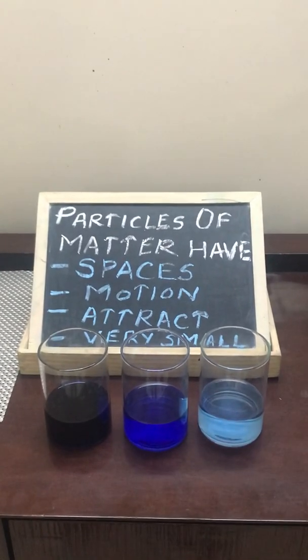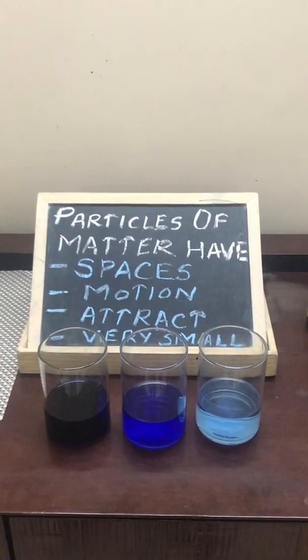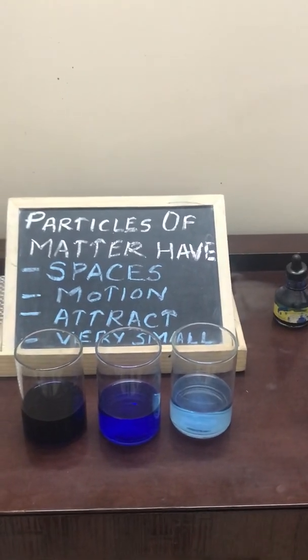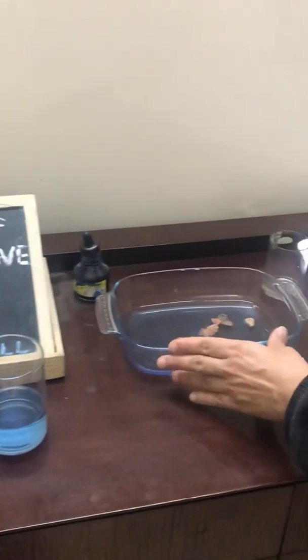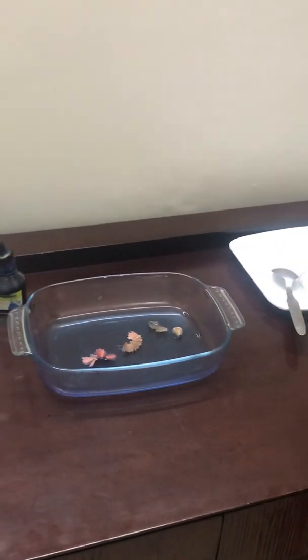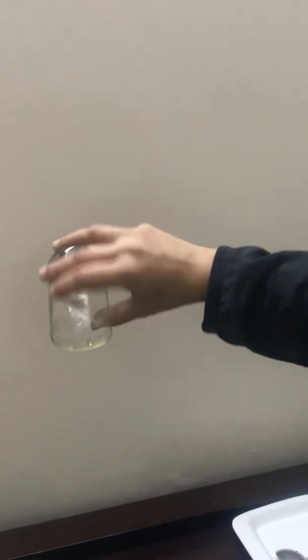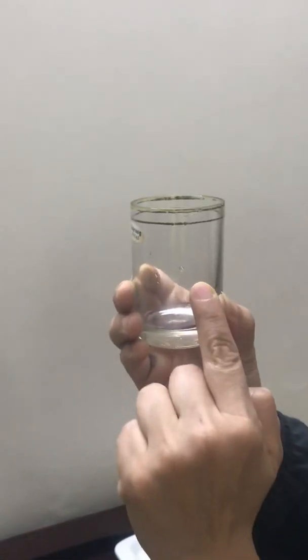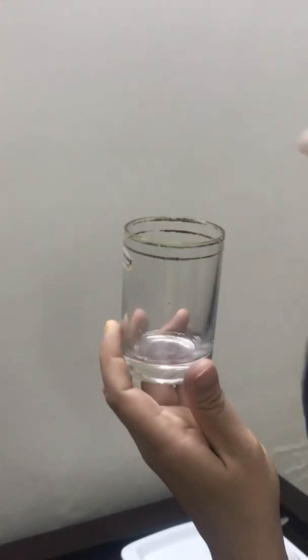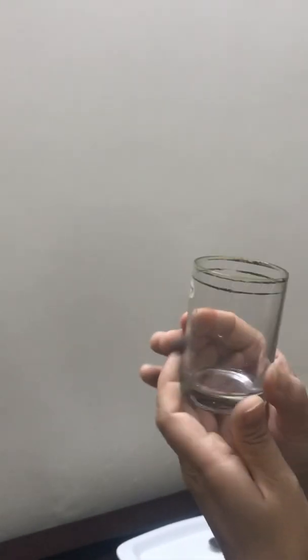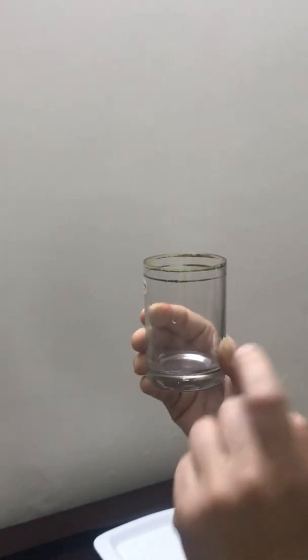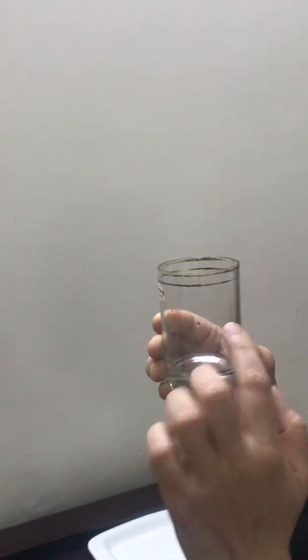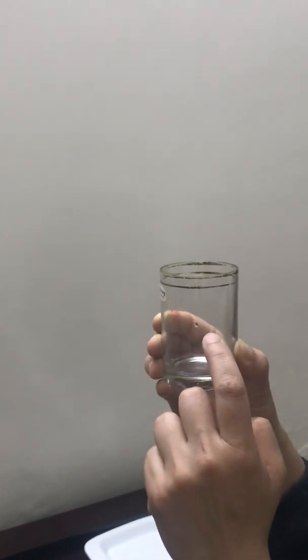The last experiment shows that particles of matter attract each other. I had added water to this particular glass, and you can see there is still a little bit of water attached to it. There is a force of attraction between this water droplet and the glass — because of this force it is sticking to the glass. This shows there is a force of attraction between unlike particles also: this is a solid and this is a liquid, yet there is a force of attraction between the two, which is why the water is sticking to the glass.